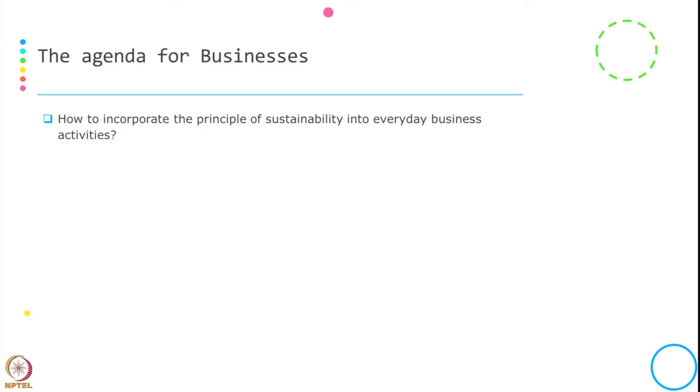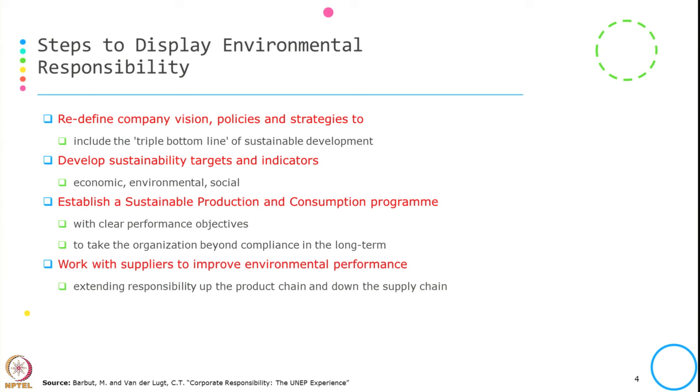Since last week we have been trying to justify why sustainability is considered important and why businesses should do this. Now, since we are talking about tools and intervention in business because of sustainability, the agenda for businesses is how to incorporate the principle of sustainability into everyday activity. This framework is given by Baruch and Van through their article on Corporate Responsibility and UNEP experience.